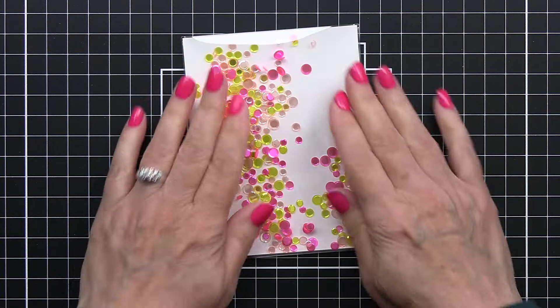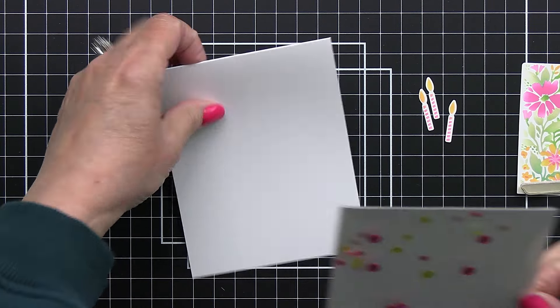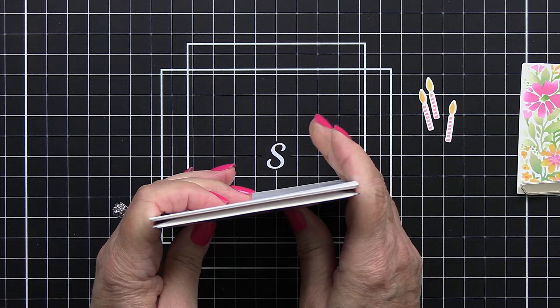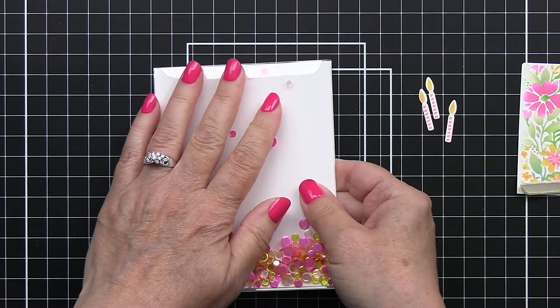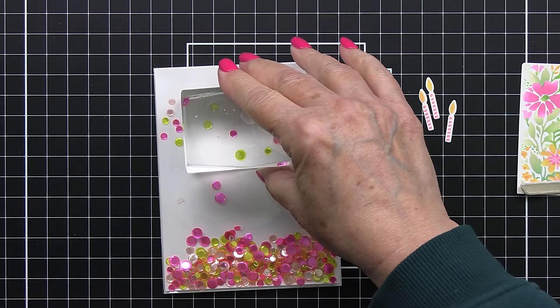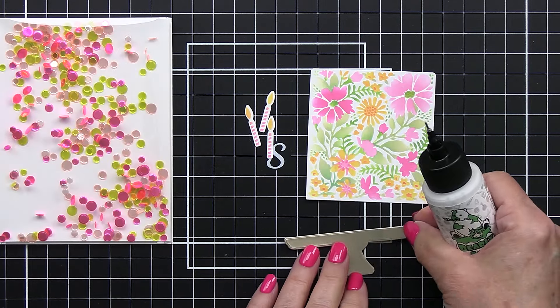Isn't that wonderful? There's so many ways that you can use this and just have a lot of fun with this. Now I did add a little bit of liquid adhesive onto the back of that and I am going to adhere that onto an A2 size top folding card base. I'll take a couple of heavy blocks here and add those onto that and let that sit and get really well adhered.